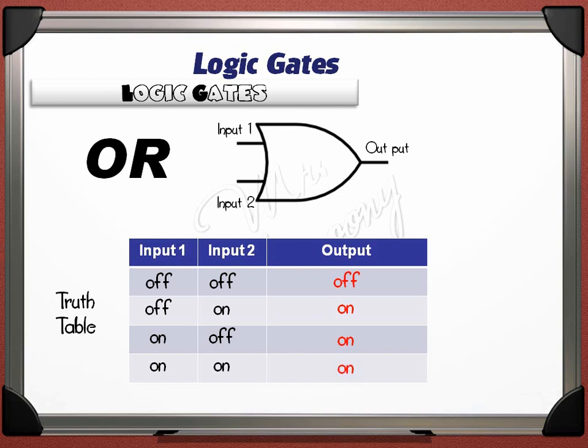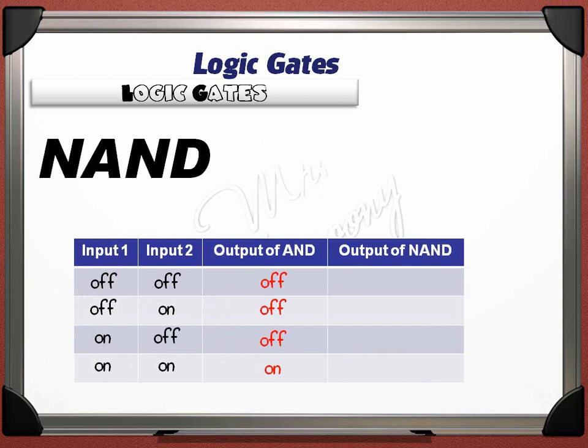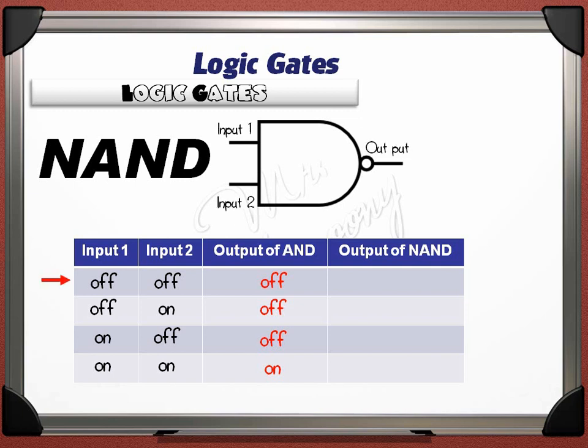The next logic gate is named NAND, or NOT AND — it is the opposite of the AND gate. You do not need to memorize it separately; just know what the AND gate gives and the NAND will be the opposite. Since OFF and OFF gives OFF on the AND gate, the NAND gives ON for that same case, and all other cases are the opposite.